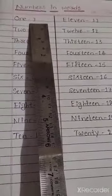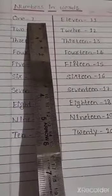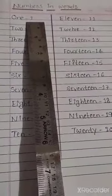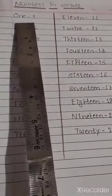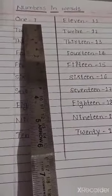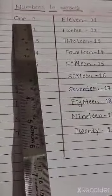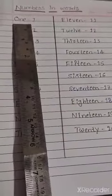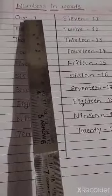So you already learnt numbers 1, 2, 3, 4, 5, 6, 7, 8, 9, 10. No children. Yes. But today we will learn the spelling of the number 1, number 2, number 3, number 4, etc. So shall we start.